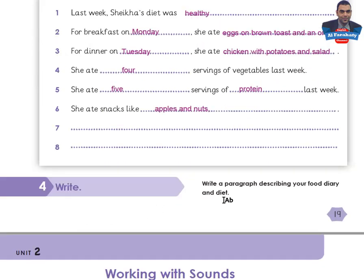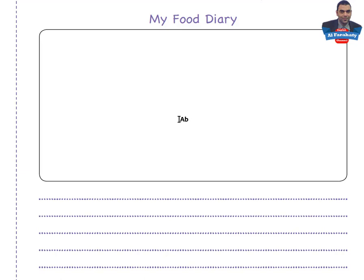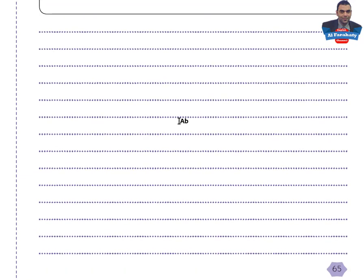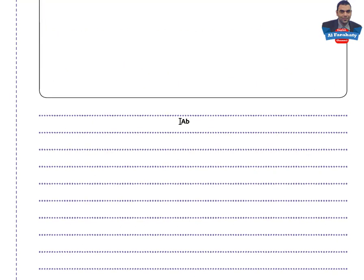Activity 4: Write a paragraph describing your food diary and diet. Dear students, you are asked to turn to the writing page with the heading 'My Food Diary' on page 65 of your skills book, and write about your food diary. By this, we've achieved the aims of this lesson. Thank you for following me. Goodbye.